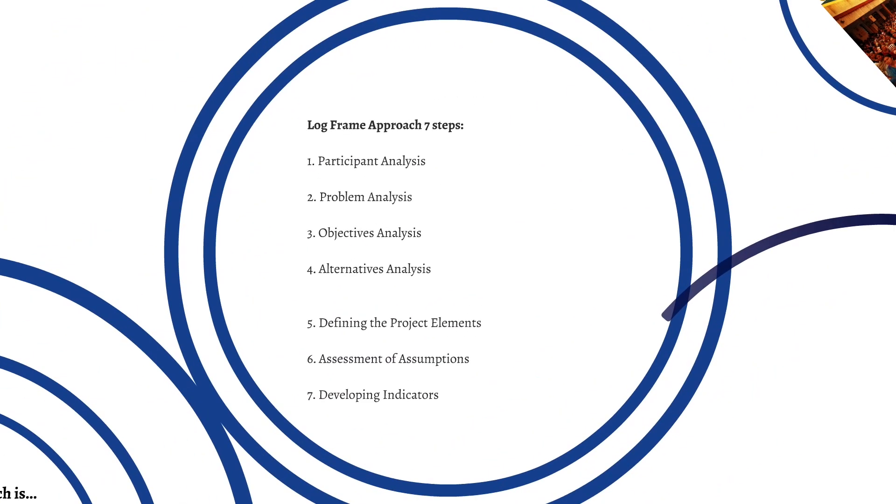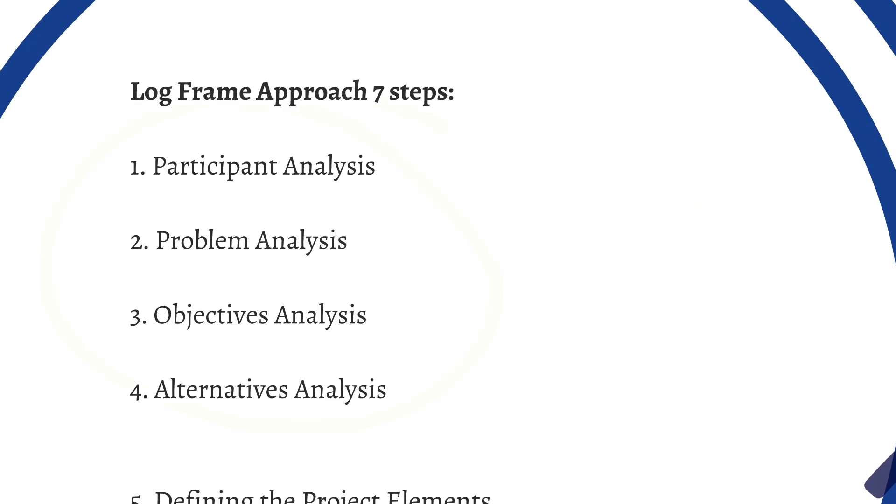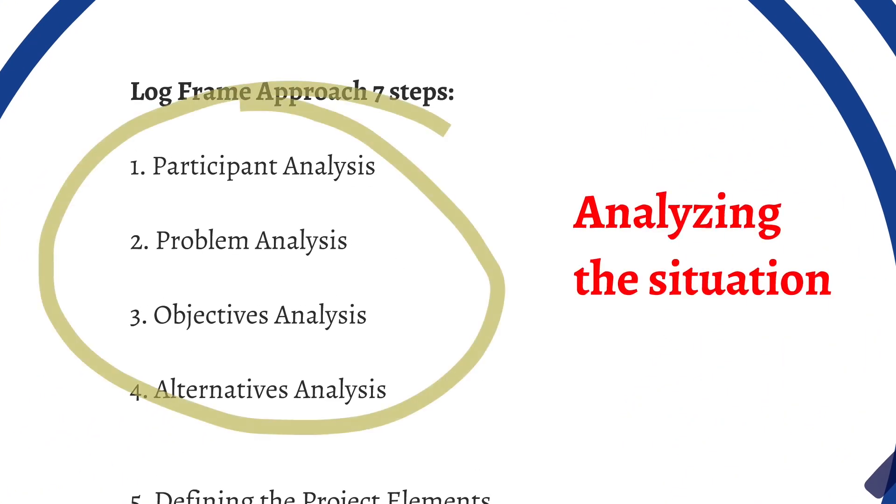The seven steps of the approach are as follows: Participant Analysis, Problem Analysis, Objectives Analysis, Alternatives Analysis, and those first four steps form the part of the method that analyze the situation or do a contextual analysis. So this is where you get your project team together and look at the whole situation and all of the forces that could affect the success or failure of your project.